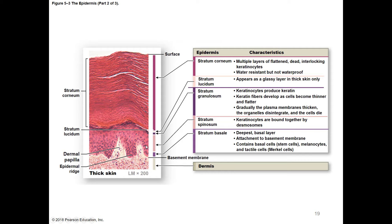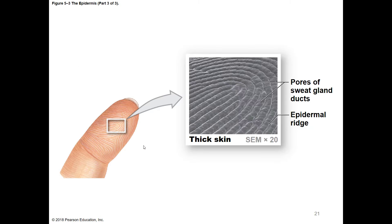Epidermal ridges are very noticeable and steep on the fingertips, causing the skin to ripple on the surface—we call those fingerprints. In between these epidermal ridges on your fingertip are little sweat gland pores. The sweat glands are constantly oozing sweat, and every time you touch something, you are leaving a stamp of sweat in the shape of your individual epidermal ridges. Fingerprints also make the tips of your fingers more rugged, giving you better gripping ability.